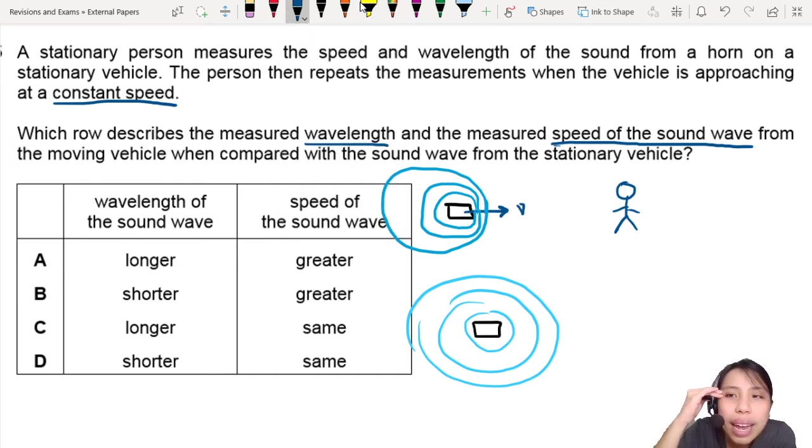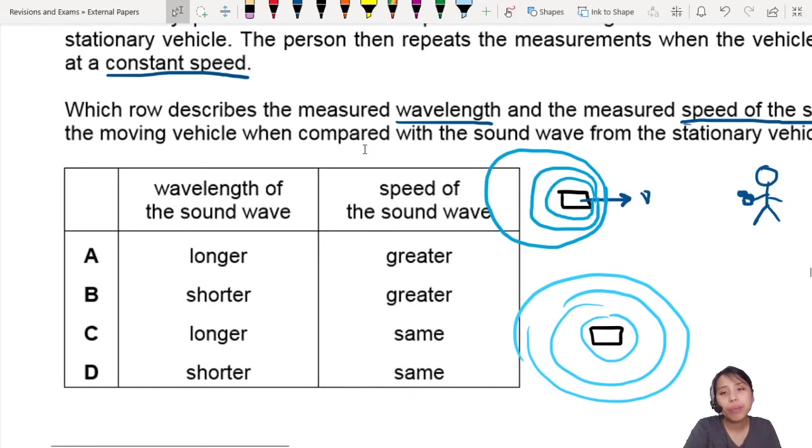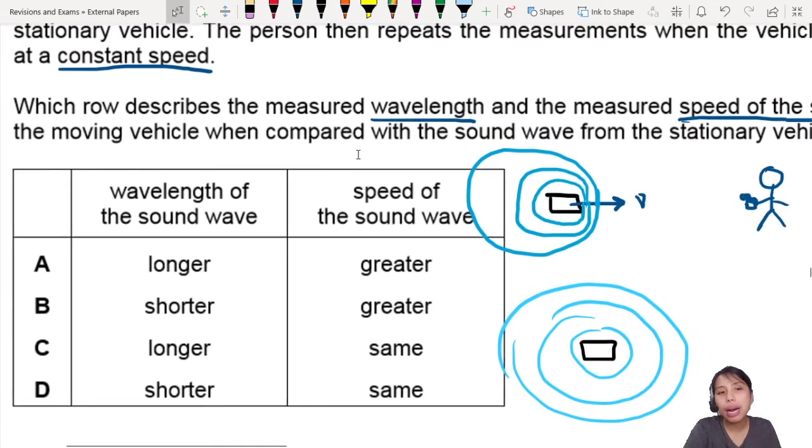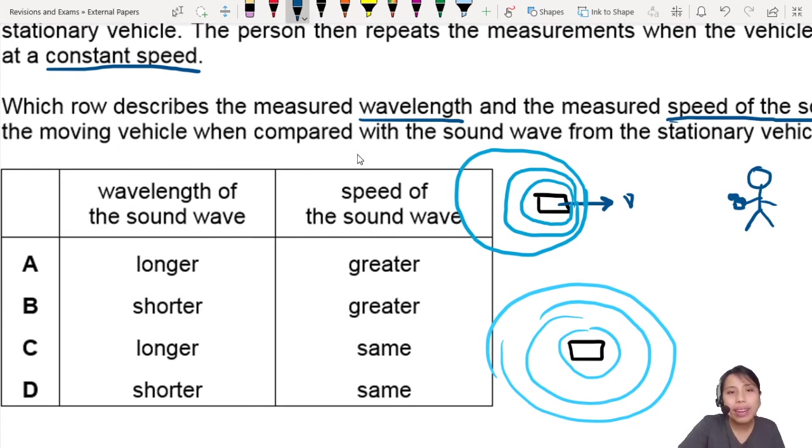So wavelength is measured by this human. So I guess this human can hold some kind of microphone in the hand. And you're trying to decide what is the wavelength when it starts moving. So if you notice, the waves are more bunched up when that human is measuring it and the car is going towards the human. So you can say the wavelength has become shorter.